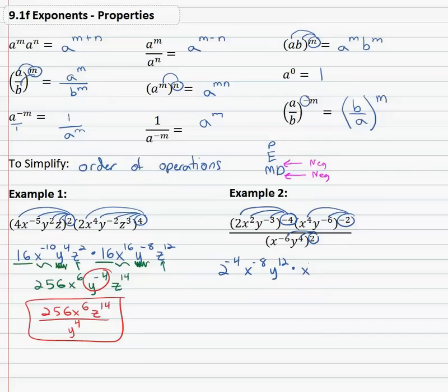Times x to the four times negative two is negative eight. Y to the negative six times negative two is positive twelve. All over. X to the negative six times two is negative twelve. Y to the four times two is eight.